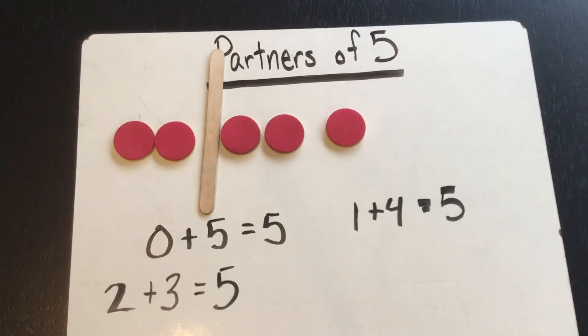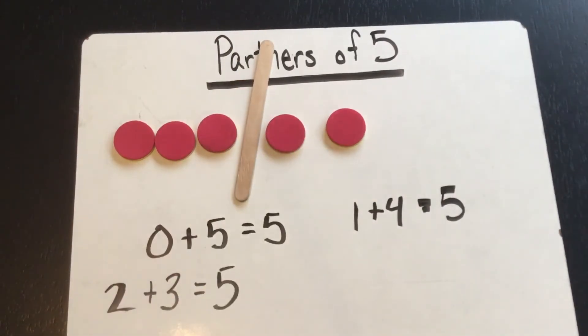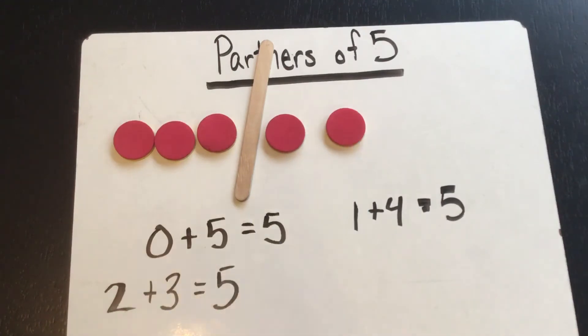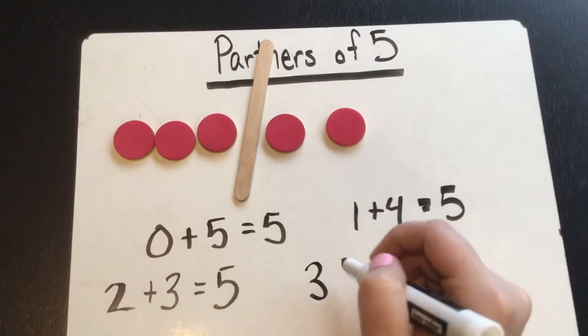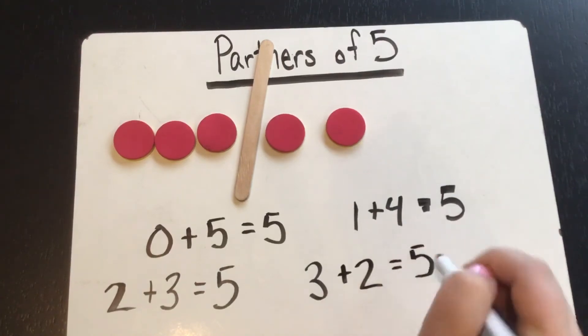We're going to move it one more time. Remember we just move it by one every single time. The partners this time would be three and two. The equation is three plus two equals five.